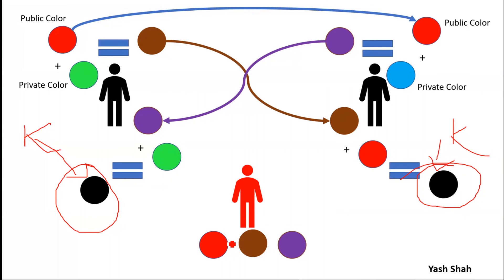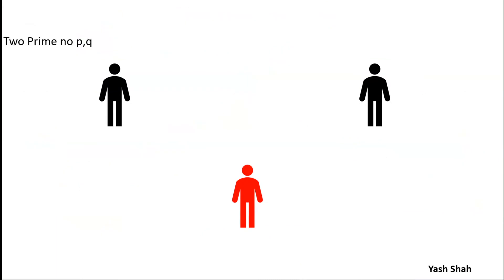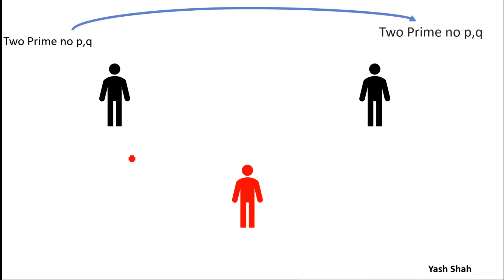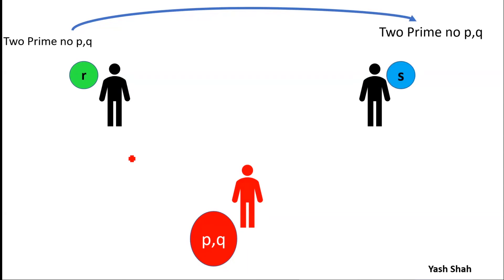Now let us start with the mathematics. We consider Alice, Bob, and the attacker. We take two public numbers — these are prime numbers, p and q — and they are sent to both sides, so the attacker also has p and q. Both Alice and Bob then select a private number: the private number for Alice is r, and for Bob is s.